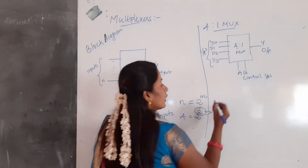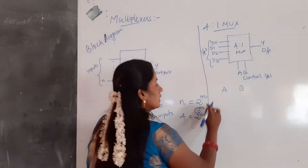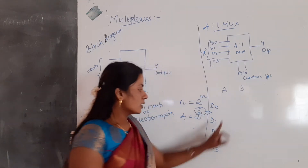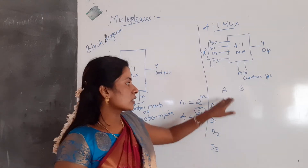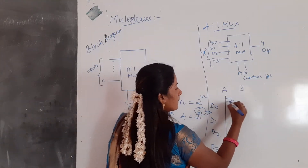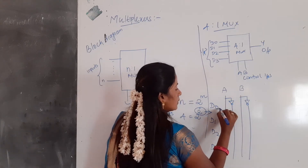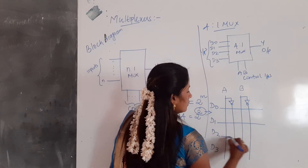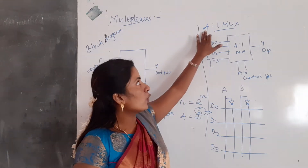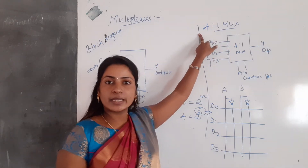To draw the multiplexer circuit: we have 4 data inputs D0, D1, D2, D3 on one side, and the selection inputs A, B — along with their complements A-bar and B-bar — on the control input side. For a 4-to-1 multiplexer, I need 4 AND gates and 1 OR gate.